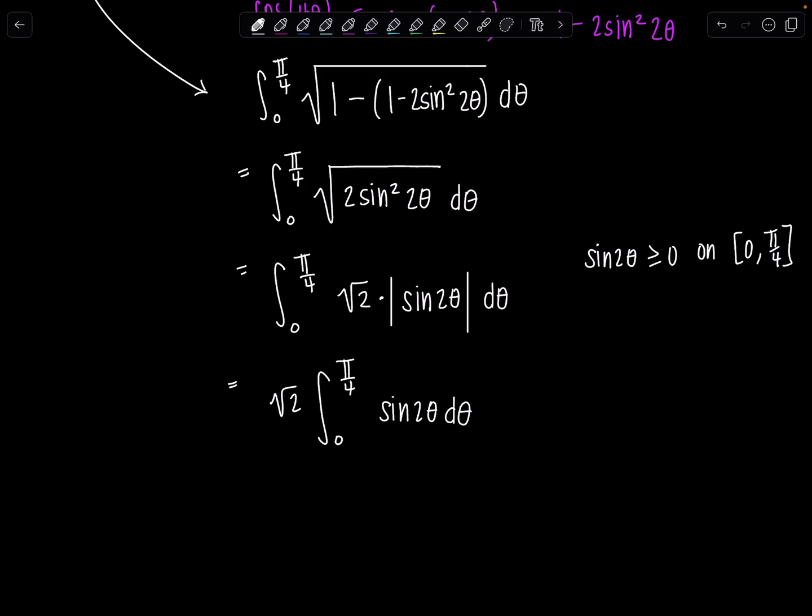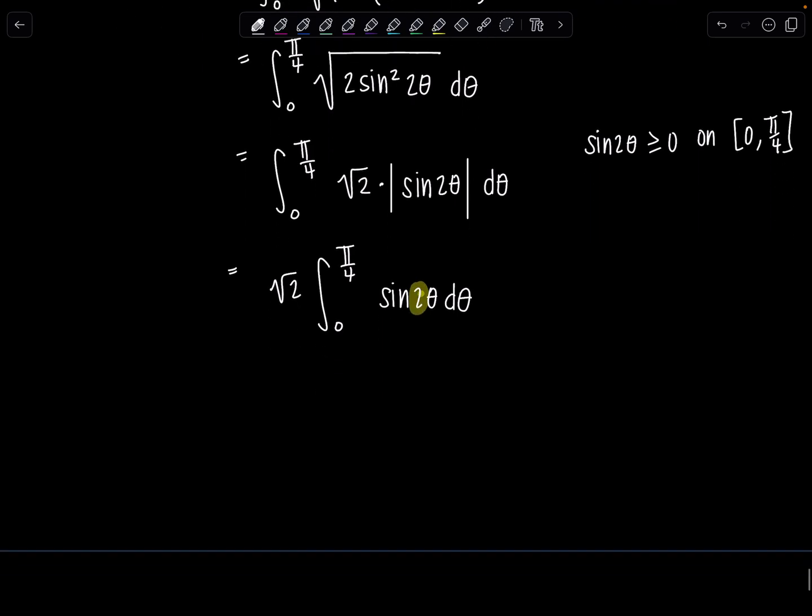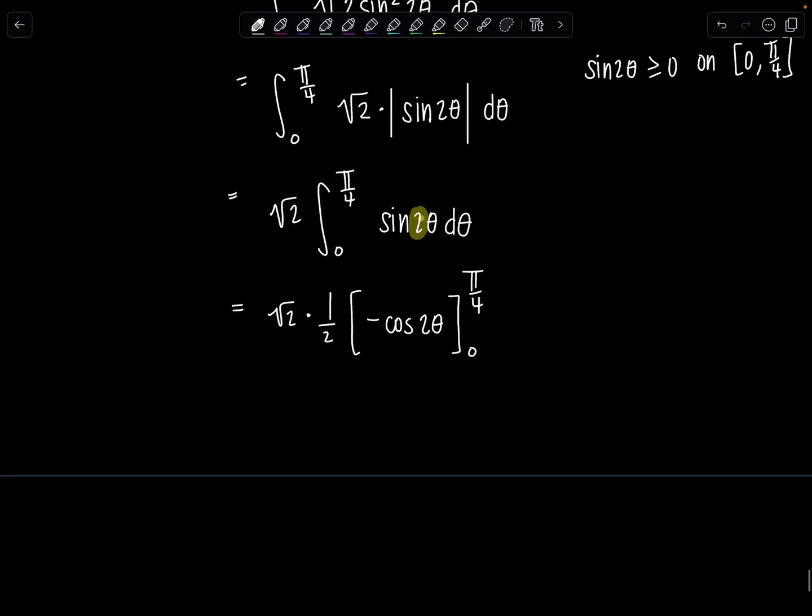And then from here, I mean, if you need to do a u sub, you can because of the 2 in front of the theta. But most of you guys who are watching these videos are pretty advanced with your integration. So, I'm just going to divide by 2 or multiply by 1/2. The antiderivative is going to be negative, right? Cosine 2θ. We'll evaluate that from 0 to π/4.